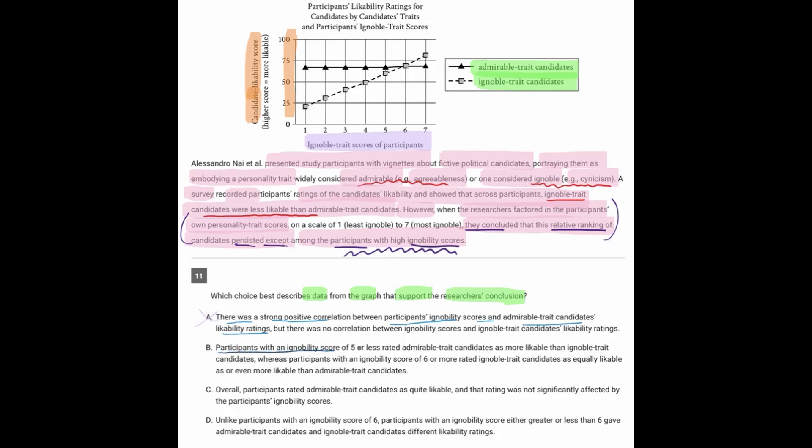Going to B. Participants with an ignoability score of 5 or less rated admirable trait candidates as more likable. Whereas participants with an ignoability score of 6 or more rated ignoble trait candidates as equally likable or even more likable than the admirable trait candidates. Well, that actually sounds really good because when the ignoability score was 5 or less, that's in this area, the participants rated the admirable trait candidates as more likable. That's the idea that this line is above this line. But for 6 or more, it basically says the opposite is true, which is also the case. Here we have the orange above the green. So we'll definitely save B for later.